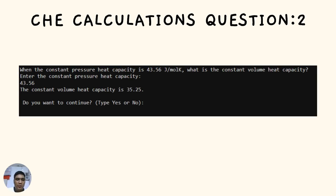Question number 2: When the constant pressure heat capacity is 43.56 joules per mole times Kelvin, what is the constant volume heat capacity? Enter the constant pressure heat capacity, which is 43.56, and it will give the constant volume heat capacity of 35.25.